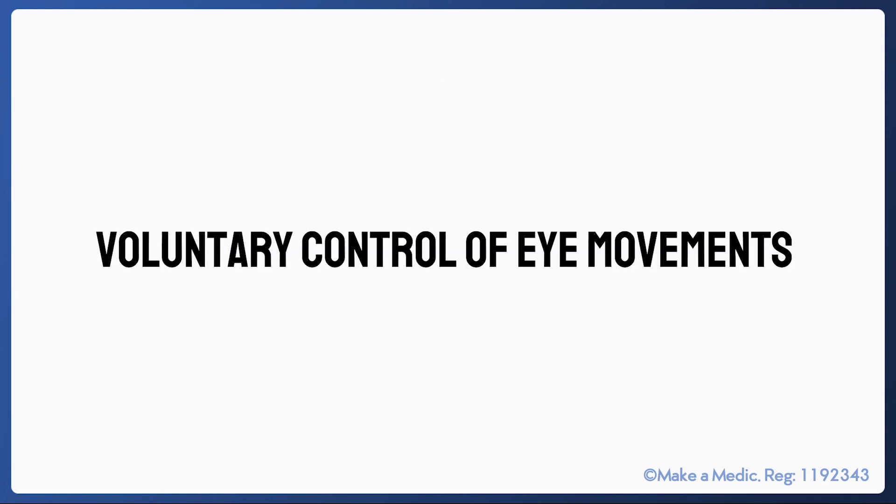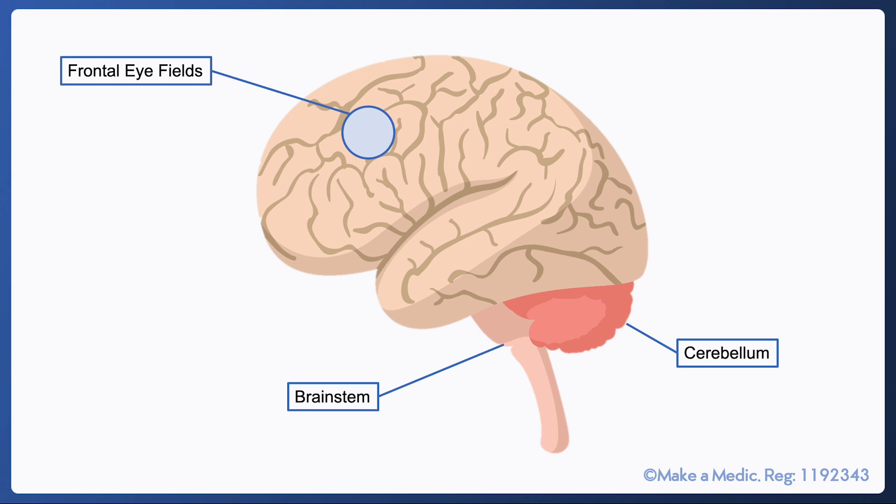Let's begin with the voluntary control of eye movements. So here's a broad overview of the areas of the central nervous system that are involved in the control of eye movements. The frontal eye fields within the cortex are responsible for initiating voluntary eye movements, the brainstem is where the oculomotor, trochlear and abducens nuclei are found, and the cerebellum, as I mentioned earlier, is important for fine-tuning.